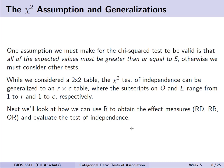We're going to leverage R to do a lot of these calculations for us. One key assumption for the chi-squared test is that all of the expected values in the expected 2x2 table must be greater than or equal to 5. Otherwise we must consider other tests to evaluate our test of association. We can also note that while we're presenting this as a 2x2 table, the chi-squared test of independence can be generalized to an arbitrary r-by-c table where the subscripts on the observed and expected cells range from 1 to r and 1 to c.